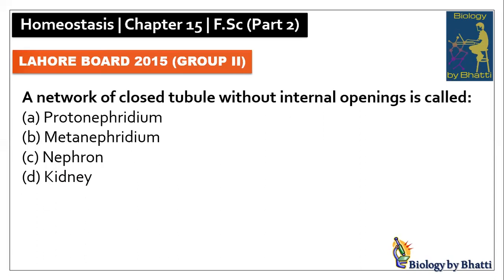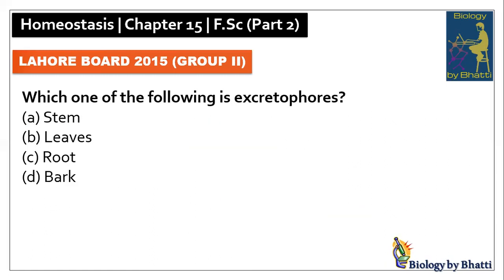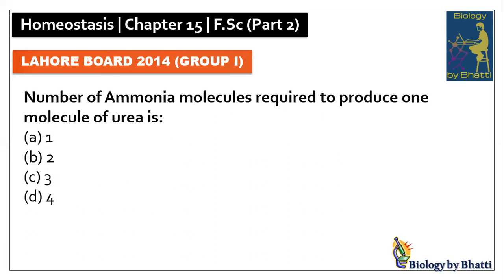Lahore Board 2015 Group 2: a network of closed tubules without internal opening is called protonephridium, so the answer was A option. In this paper, which one of the following is an excretophore — leaves are excretophores, so the answer was B option.